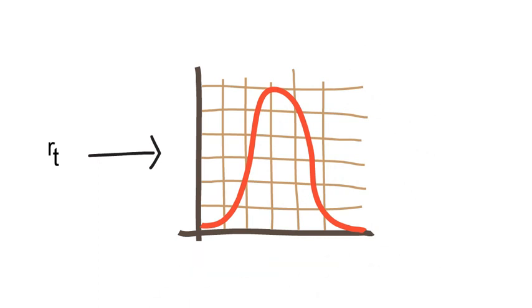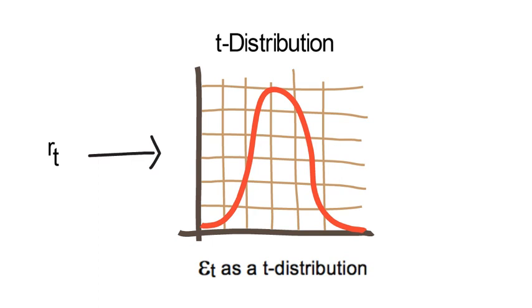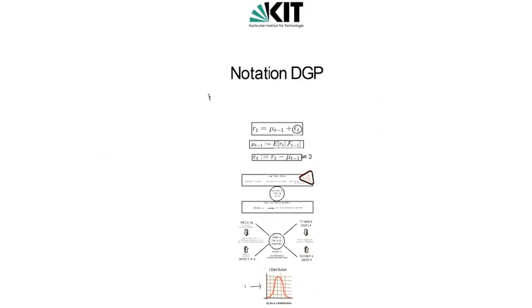But if you want rt to follow a t-distribution or any other type of fat tailed distribution, you need to model epsilon t as a t-distribution or with your particular choice of fat tailed distribution.